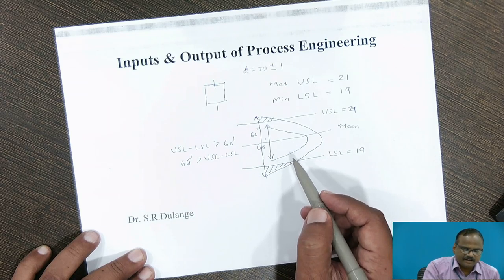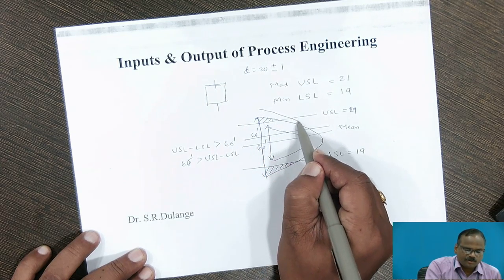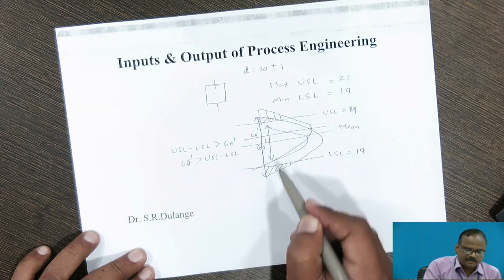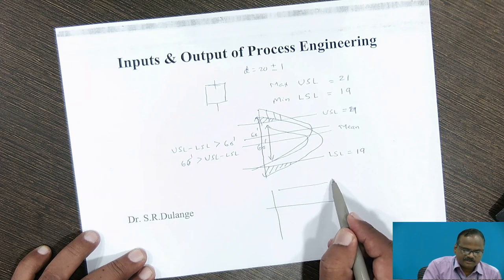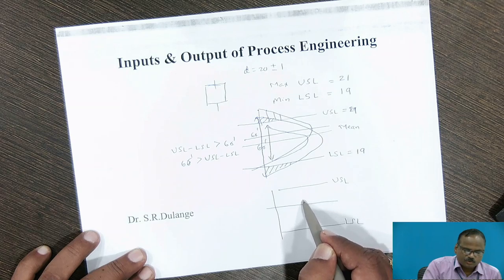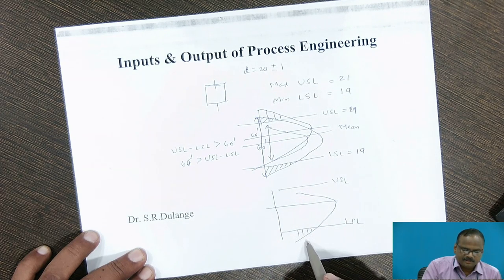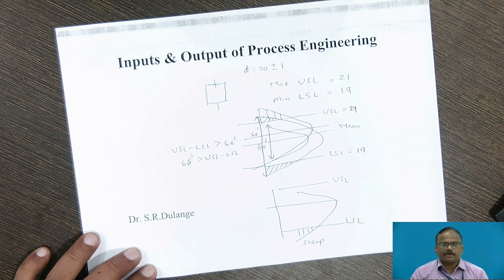Similarly, we can consider a shift in the mean towards the top side. Here, this is USL and this is LSL. If the mean shifts, some components become scrap. This is a simple example to understand process capability.